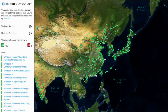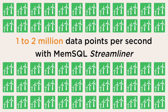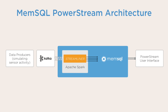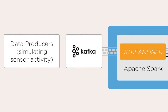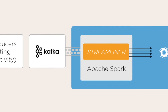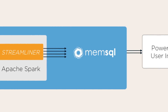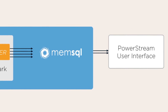Data producers generate sensor activity, pushing about a million data points per second into an Apache Kafka topic. The topic is consumed by a MemSQL streamliner data pipeline. The pipeline uses a machine learning algorithm to predict the health of each turbine prior to streaming data into MemSQL. The application is served from the same MemSQL database while the pipeline is ingesting sensor data.